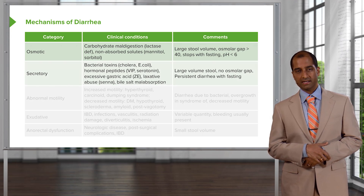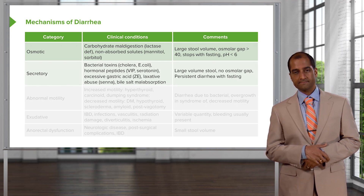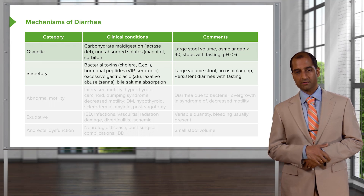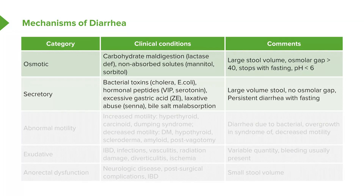A second type: secretory diarrhea. The ones you should be quite familiar with are those that are peptide-like. For example, the type of tumor that produces too much serotonin would be carcinoid. Whenever you think about carcinoid tumor, you should be thinking about it residing within the intestine — that's where the carcinoid tumor begins. The type of stool finding you would examine for is 5-hydroxyindoleacetic acid, or 5-HIAA. That's one type of secretory diarrhea.